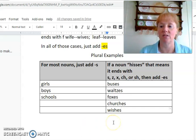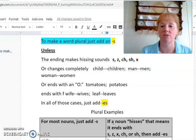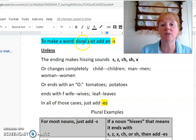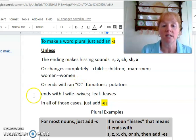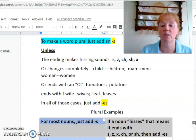I hope that helps you understand rule 22 better. Let's sing the song one more time before we leave. To make a word plural, just add an S unless the ending makes hissing sounds or changes completely or ends with an O. In all of those cases, just add E-S. Okay. Have a great day, and I'll see you in a few minutes with the spelling words.